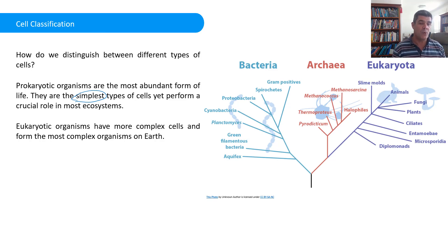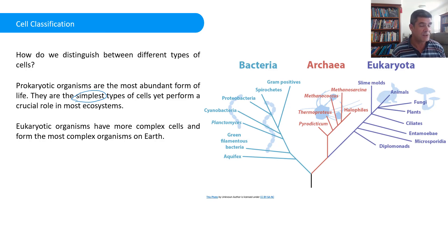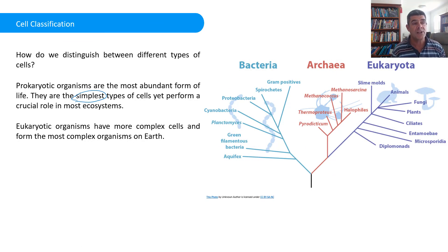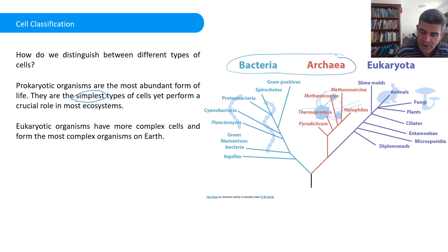Eukaryotic organisms are the more complex cells and they make up the wide diversity of life that we see. Certainly the different types of organisms visible to the naked eye are pretty much all eukaryotic. We need microscopes to look at prokaryotic organisms, and we ourselves belong to the group of eukaryotic organisms. From the family tree here, you can see how each of these different groups has developed over time — prokaryotic organisms are split into two important groups: the bacterial group and the archaea.